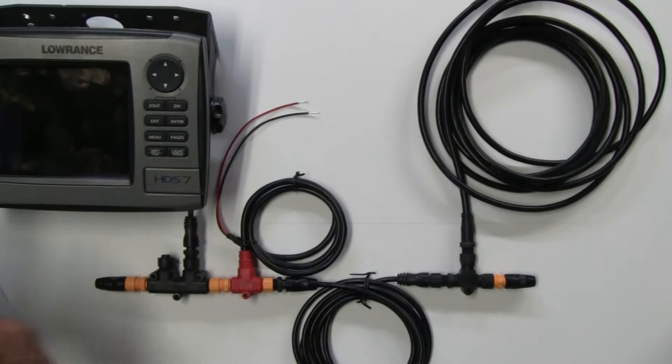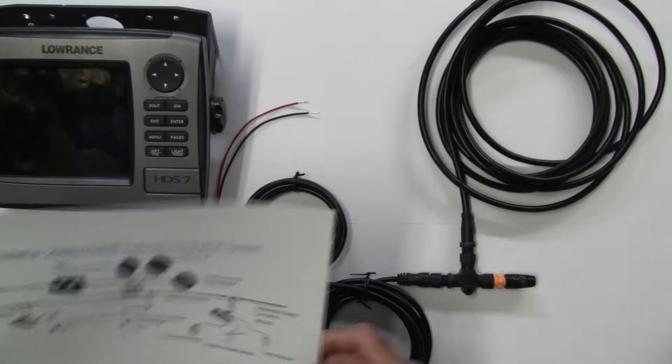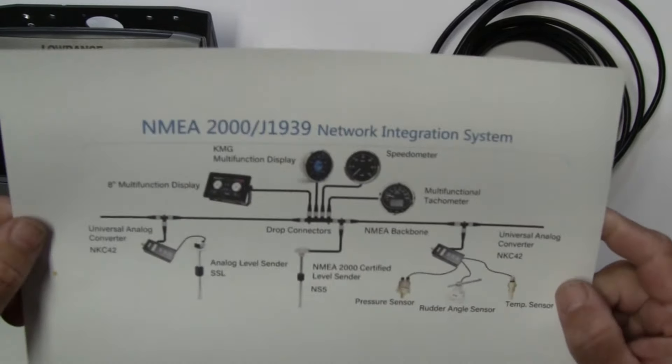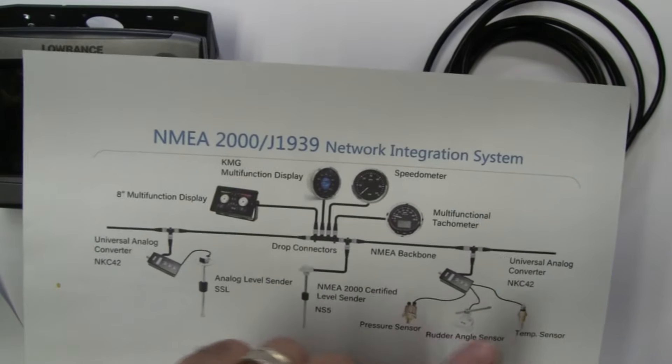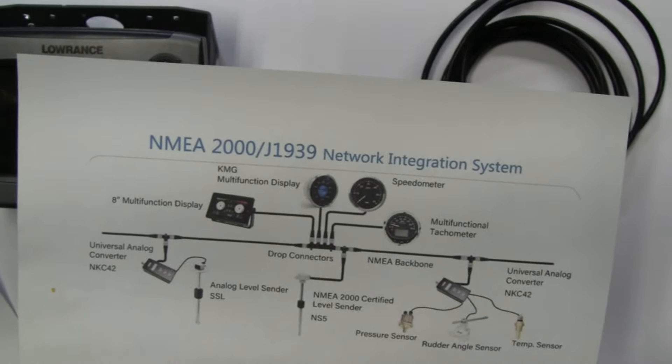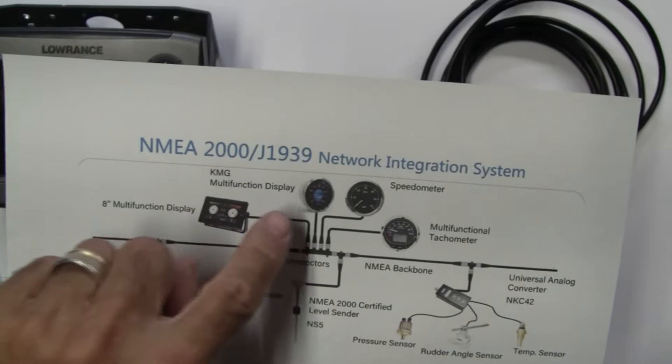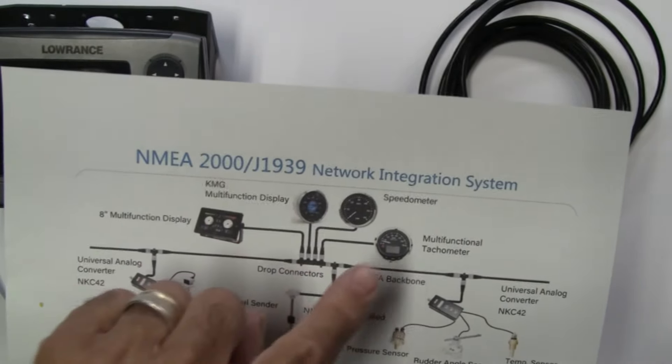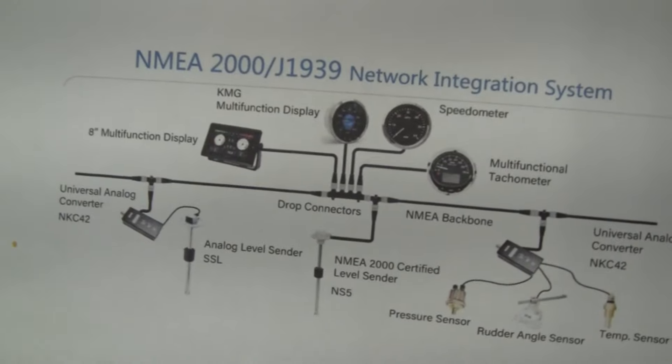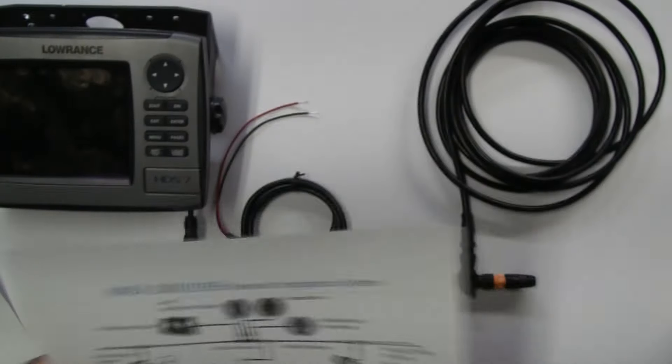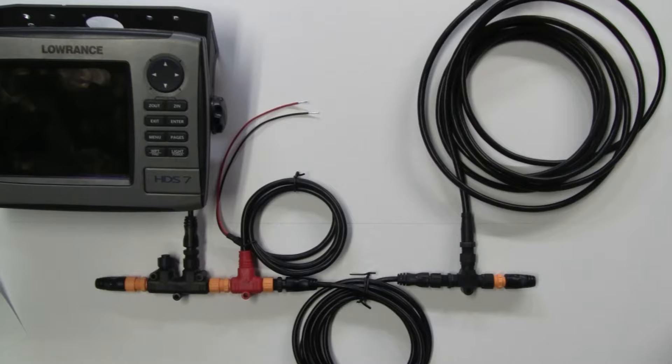And I've got a pretty neat diagram here of what a NMEA network might look like and what components might be on there. You might have pressure sensor, temperature sensor, rudder angle sensor if you're sailing, various components, speedometer, tachometer, multifunction tank and multifunction display, which is how I'm going to have mine set up.